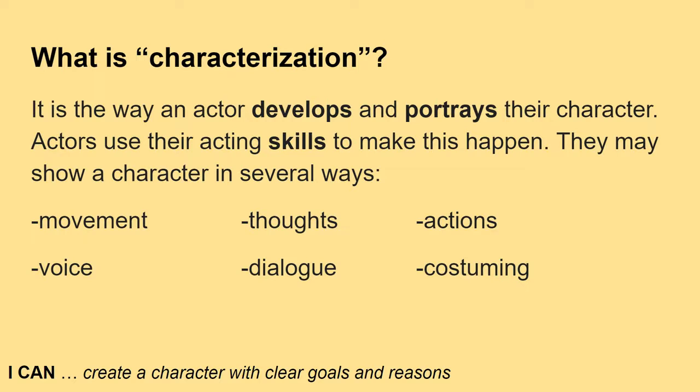Sixth: costuming — how the character looks in terms of what they're wearing. Are they wearing a pirate outfit, a tuxedo, or an Iron Man suit? That makes a big difference in the type of character you as an audience member are perceiving. And finally: makeup — it can make someone look younger or older, turn humans into animals with horns, and all kinds of cool things.